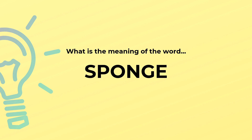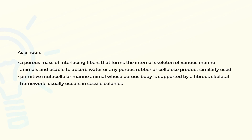What is the meaning of the word sponge? As a noun: a porous mass of interlacing fibers that forms the internal skeleton of various marine animals and usable to absorb water, or any porous rubber or cellulose product similarly used.